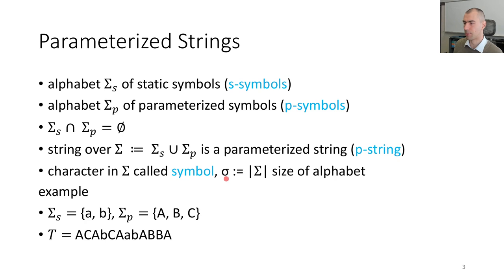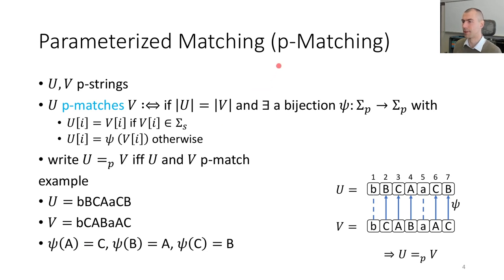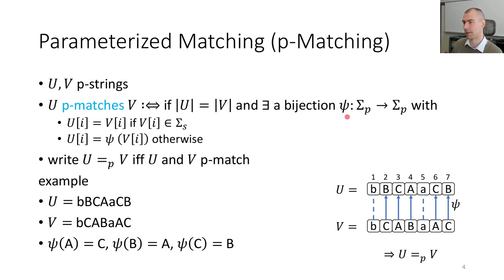With small sigma, we define the size of this alphabet. In the following examples, we keep small characters for static symbols and capital letters for the parameterized symbols. For the matching, we define a so-called p-match as follows: given two p-strings, we say they match if first they match with respect to the static characters, and second we can find a bijection psi on the parameterized symbols such that we can match each parameterized symbol of v to u.